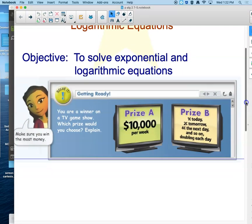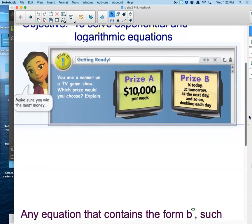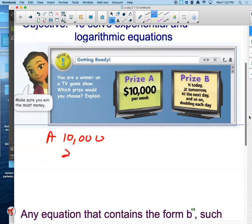But this getting ready is a really good one to think about here. You are a winner on a TV game show, which prize would you choose and explain? So prize A, you're going to get $10,000 every week. After one week I'll have $10,000. After the second week I'll have $20,000. After the third week I'll have $30,000.